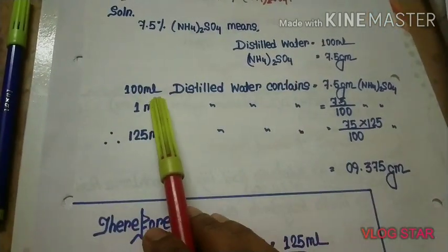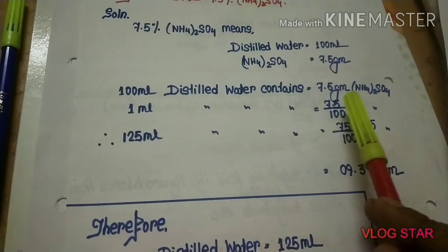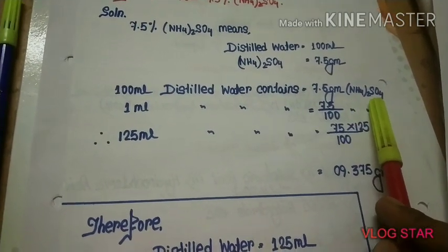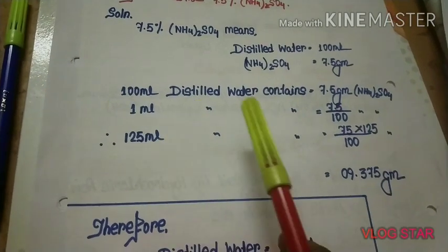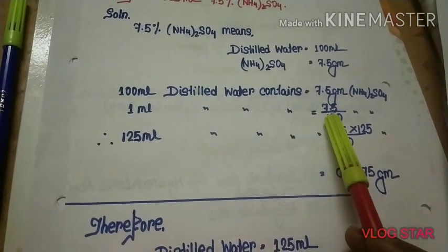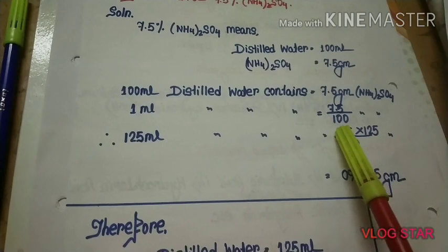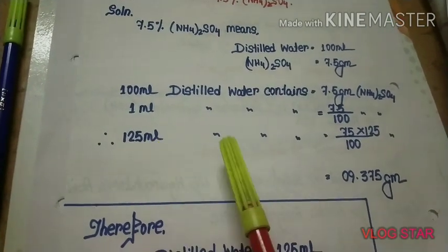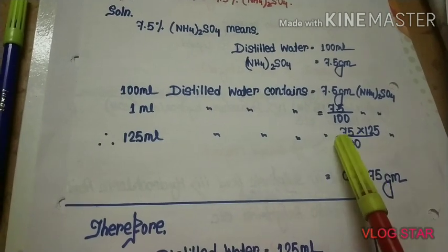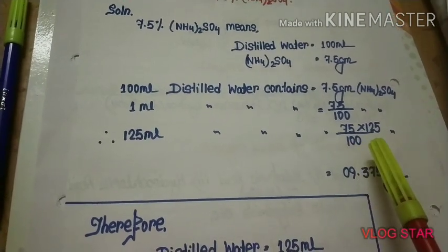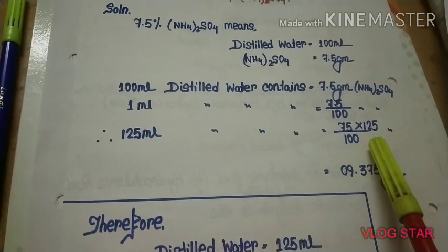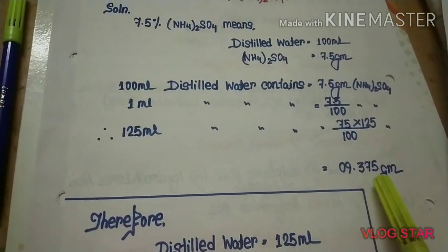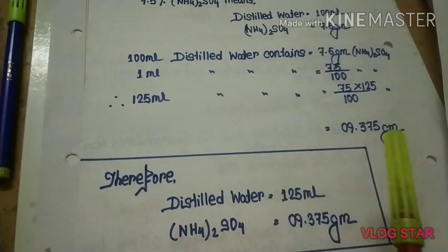100 ml distilled water contains 7.5 grams of ammonium sulfate. 1 ml distilled water contains 7.5/100 grams. 125 ml distilled water contains (7.5 × 125)/100 = 9.375 grams of ammonium sulfate. Therefore: distilled water = 125 ml, ammonium sulfate = 9.375 grams.